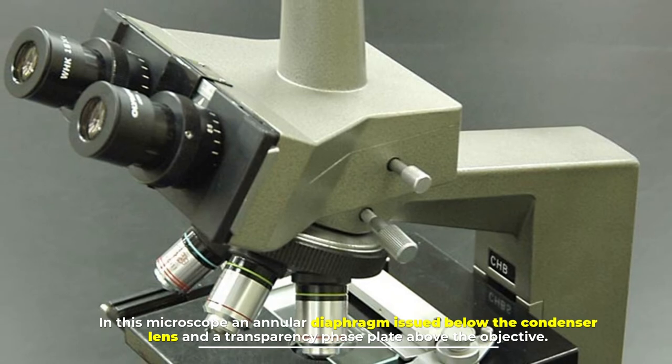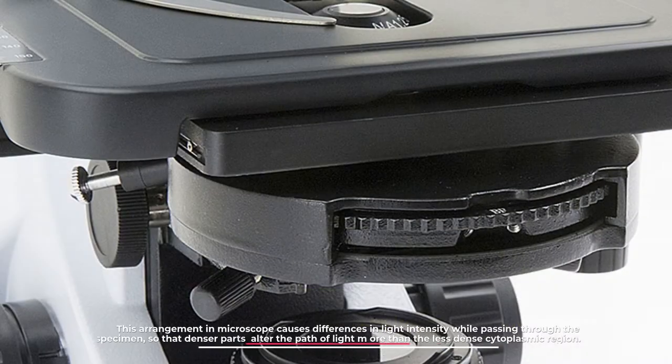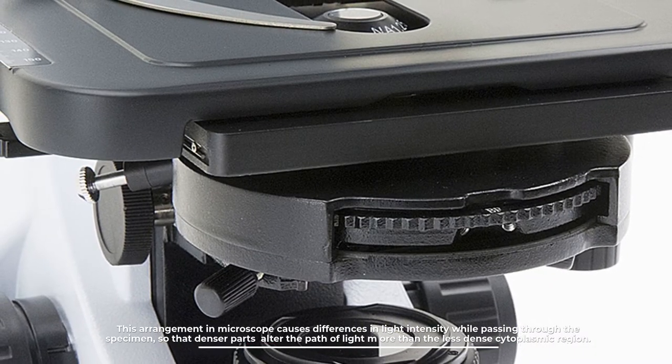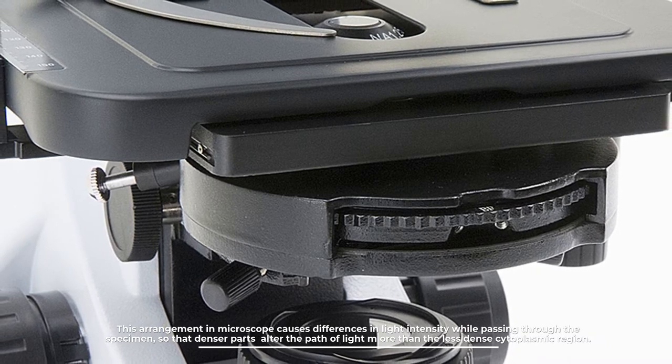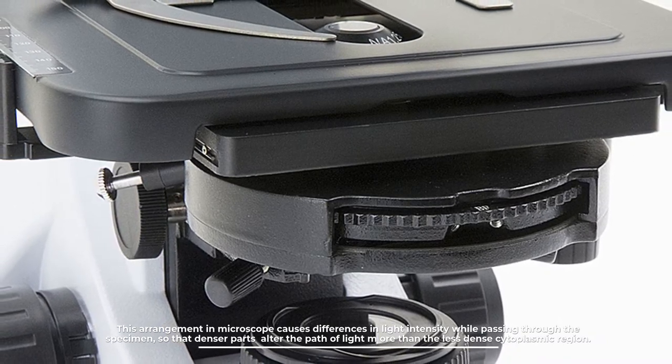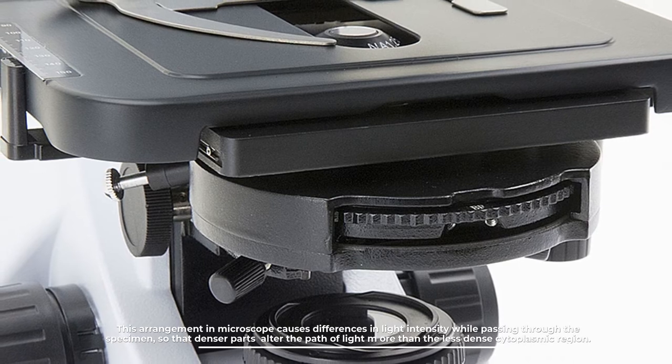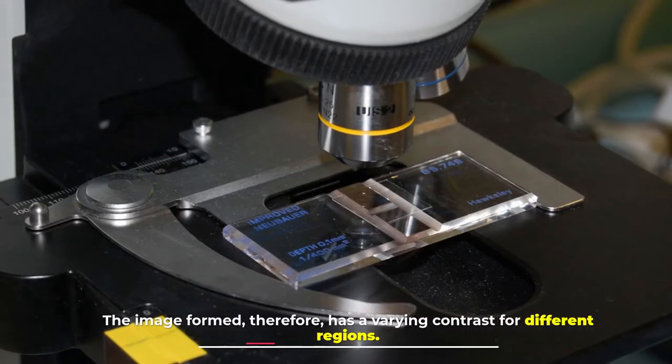This arrangement in microscope causes differences in light intensity while passing through the specimen so that denser parts alter the path of light more than the less dense cytoplasmic region. The image formed therefore has a varying contrast for different regions.